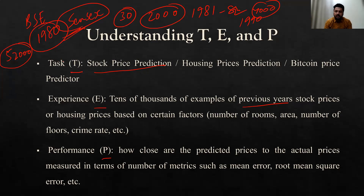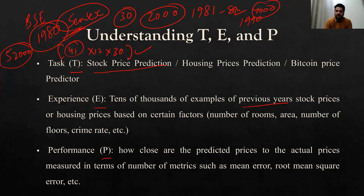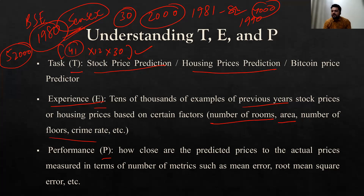For house price prediction, the experience factors include: how many rooms are there, what is the area, number of floors, the crime rate around the area, how many schools are nearby, whether it's a corner house — thousands of things we consider when buying a house. Those values help us gain experience to predict the price. Similarly for Bitcoin price prediction — Bitcoin is about 10 years old and there isn't as much data, but for short-term value prediction you can do it for stocks as well as Bitcoin in the same way.